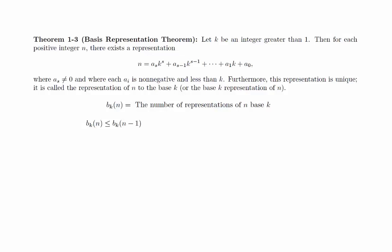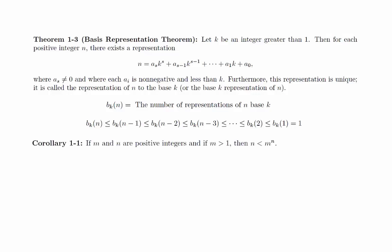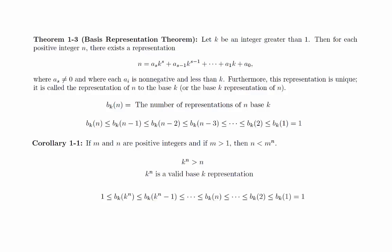By noting that the calculation works for any positive integer n, we can apply this repeatedly to get a whole string of inequalities. Also, b sub k of 1 equals 1, since any other representation will be greater than 1. We can use this to show that there is at most one representation of n for any n. However, we need to show that there is at least one representation to complete the proof. For our application, we will have k to the n is greater than n. Since k to the n is a valid base k representation, we have the following string of inequalities. Notice that this shows that b sub k of n equals 1, which completes the proof.